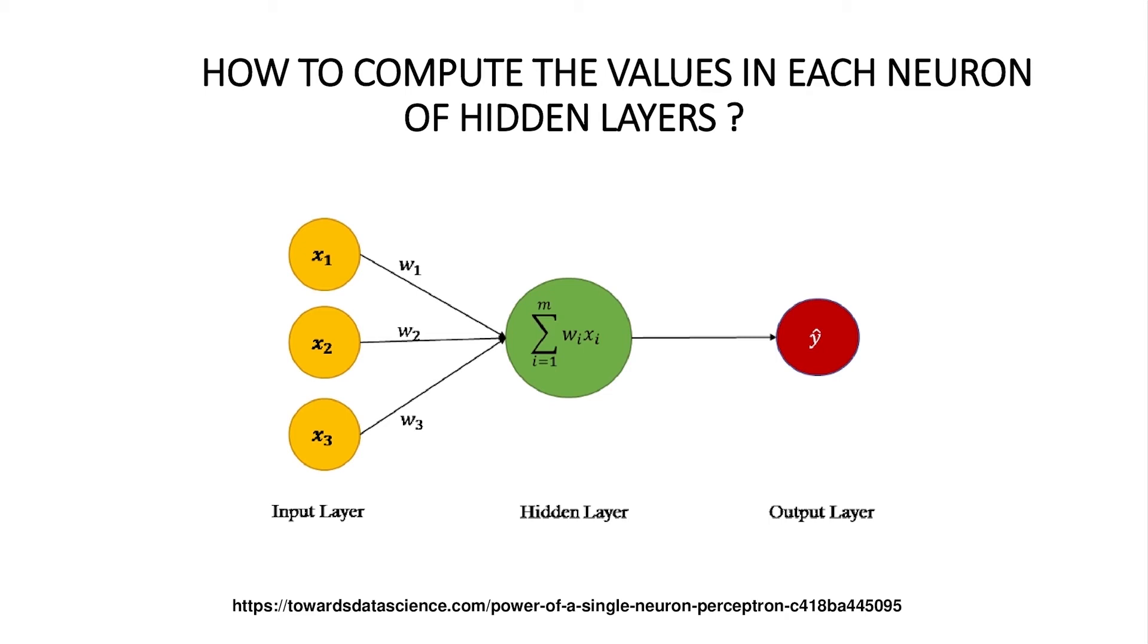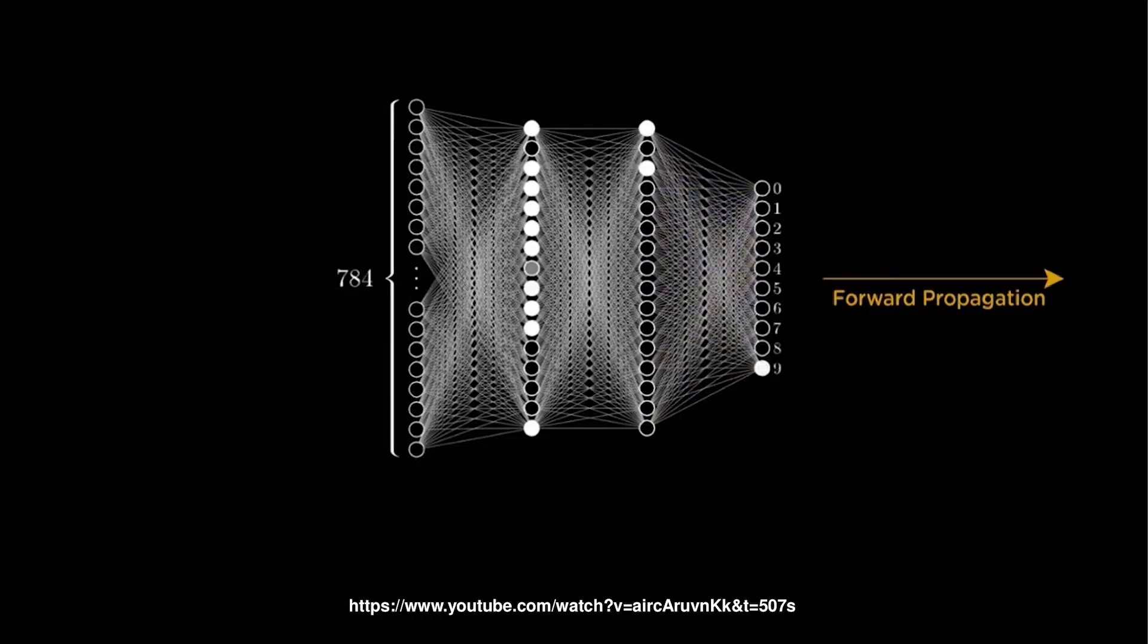Each of these channels are assigned a particular numerical value called weights. The inputs are multiplied to the corresponding weights and their sum is sent as input to the neurons in the hidden layer. Each of the neurons is associated with a numerical value called bias, which is then added to the input sum. It is this value which is then passed through a threshold function called activation function. The result of the activation function determines if the particular neuron will get activated or not. An activated neuron transmits the data to the neurons of the next layer over these channels.